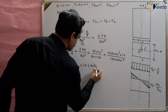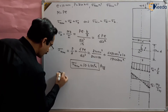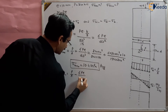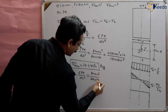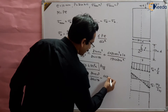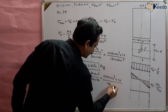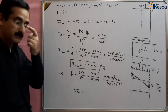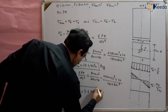For Sigma min: Sigma min = P/Area − 6PE/(D·B²). Substituting: 240 × 1000 / (200 × 150) minus 6 × 240 × 1000 × 10 / (150 × 200²). Solving gives Sigma min = 5.6 mega Pascal.